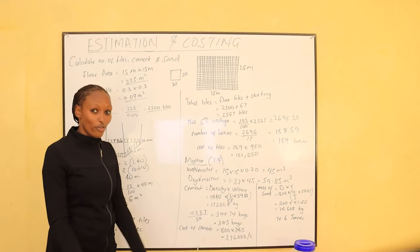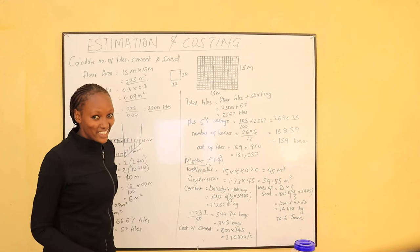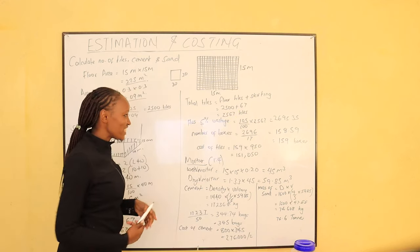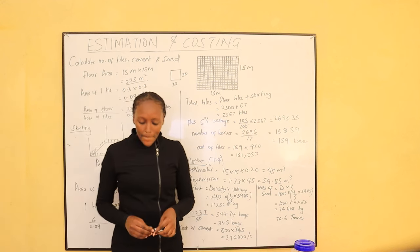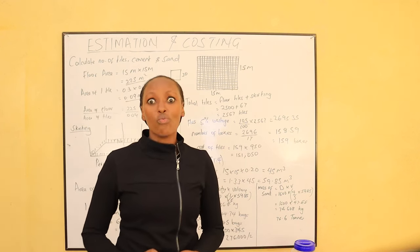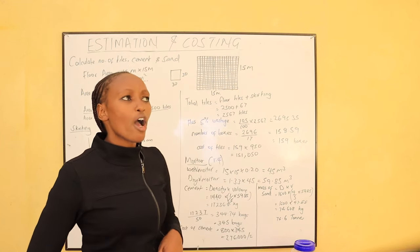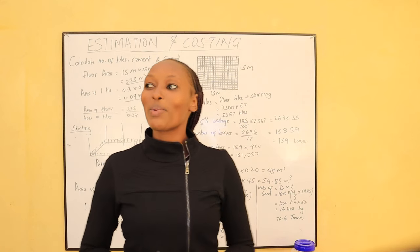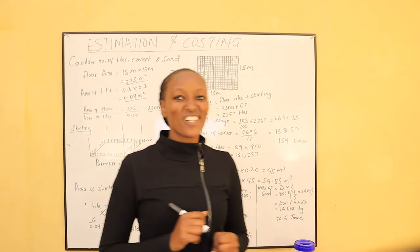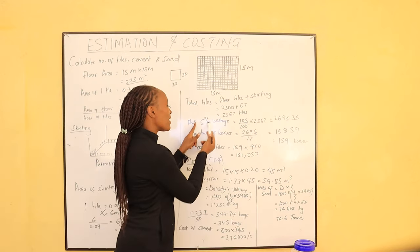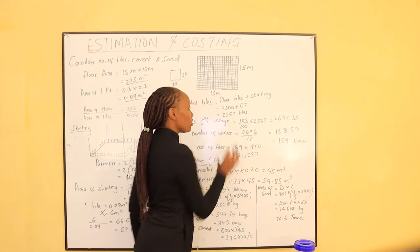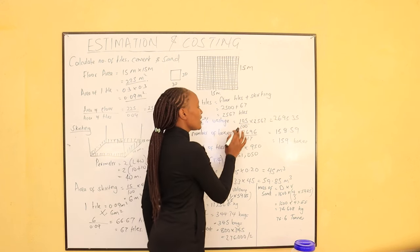The total number of tiles is the floor tiles plus the skirting tiles: 2,500 + 67 = 2,567 tiles. Whenever we do tiling, tiles are fragile — some break during transport, others break before tiling begins. So we add 5% of the total tiles for wastage. Therefore, we need 105% of 2,567 = 2,695.35, which we round up to 2,696 tiles.